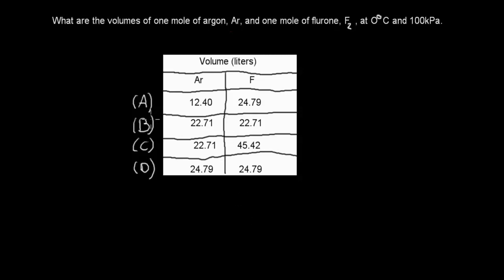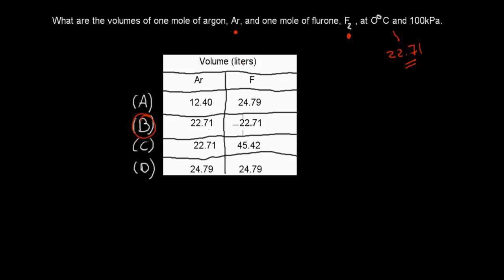Welcome back. The correct answer is B. We have one mole of argon and one mole of fluorine gas (F2). Even though fluorine is diatomic, it is still one mole of molecules. The molar volume at 100 kPa and 0°C is 22.71 L/mol for any ideal gas. So both argon and fluorine have a volume of 22.71 L. The other options are incorrect. (Note: fluorine should be stated as fluorine gas, F2.)